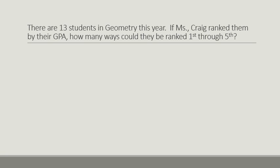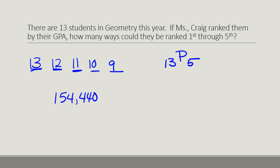So I have 13 students in my geometry class this year. And if I want to rank them based on their GPAs, 1 through 5, how many different ways could they be ranked? Well, this is five things. If I rank the first kid, there's 13 kids. Then I've got 12 for second place, 11 for third, 10 left for fourth, and 9 left for fifth. So I have 13 things taken five at a time. So there is a button on the calculator in the probability menu that will let you do that, and that gives me 154,440 different ways.